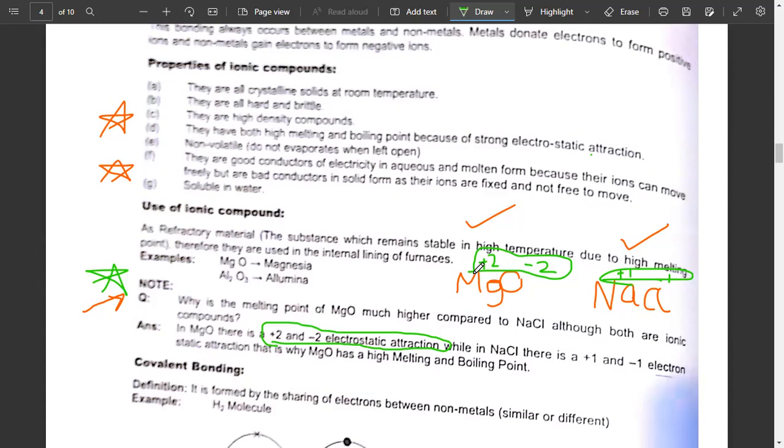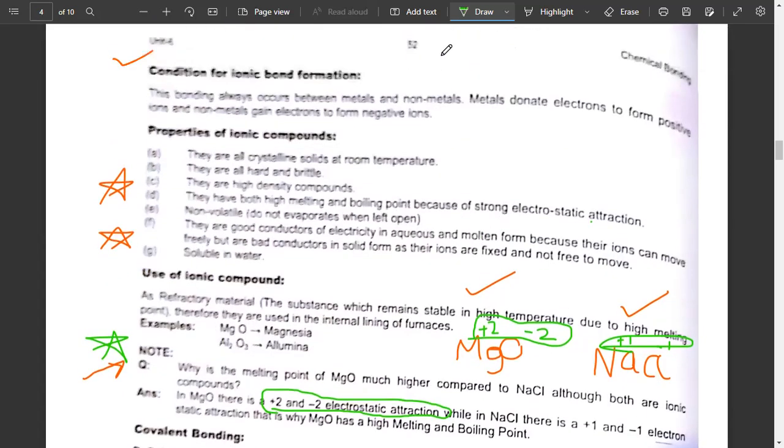Ionic compounds have high melting and boiling points because more temperature is needed to overcome the forces of attraction and to break those bonds. Breaking of bonds is endothermic while bond formation releases energy, and this is all for ionic bonding.